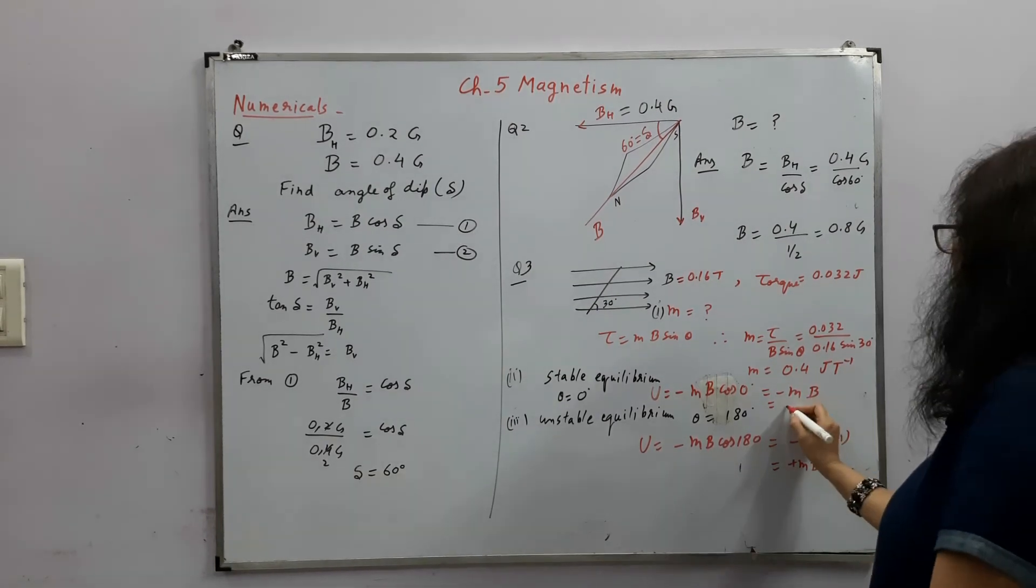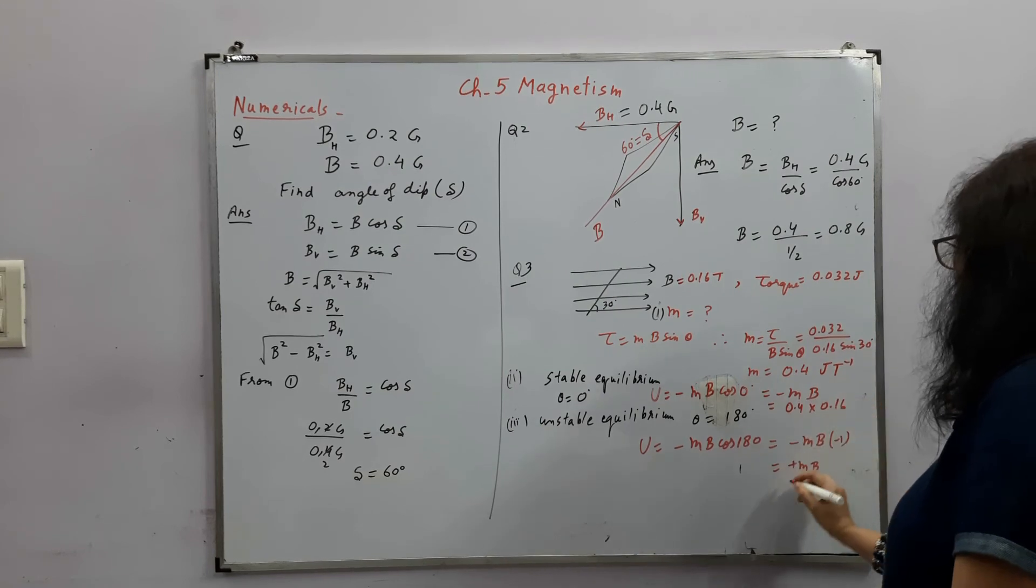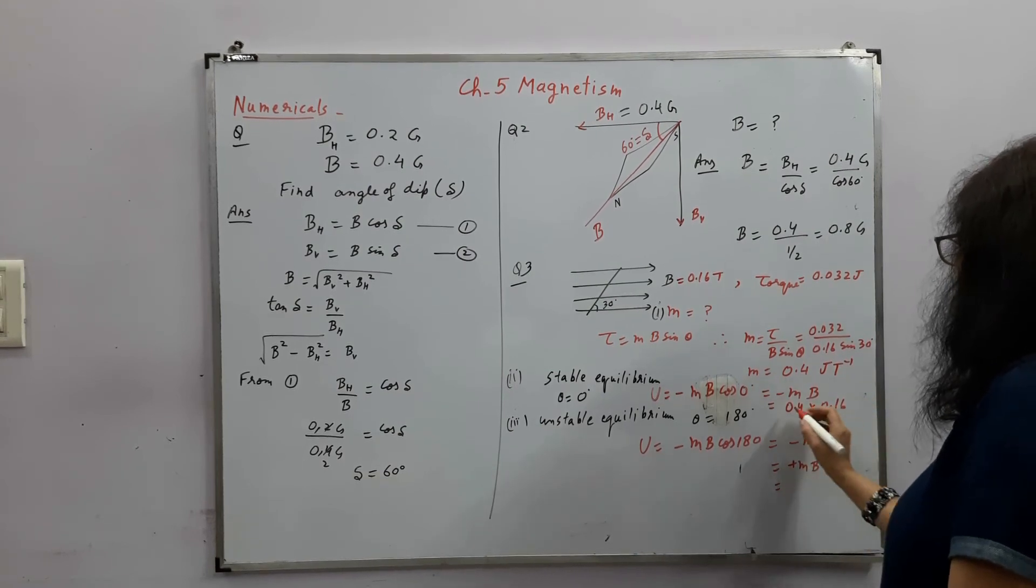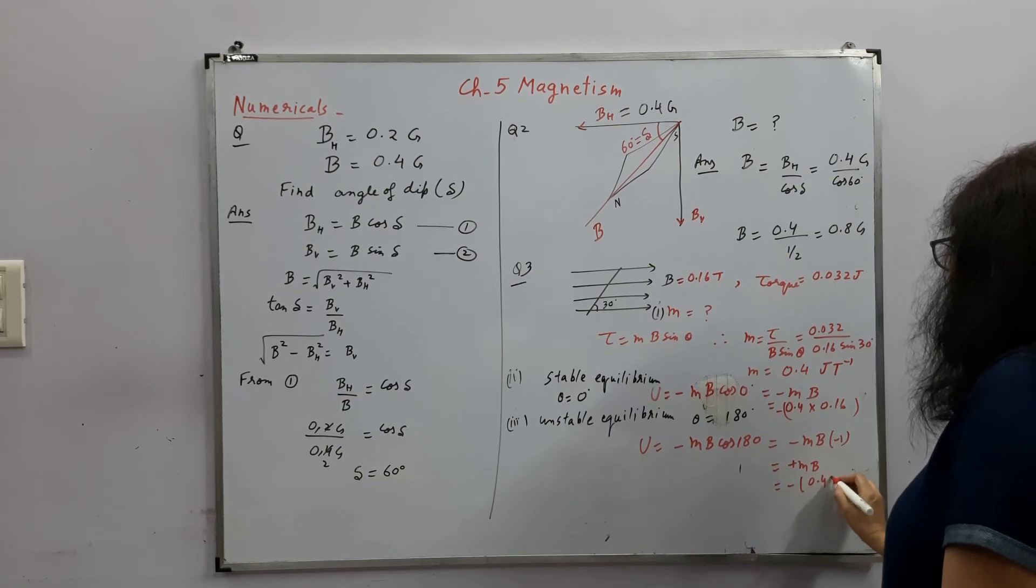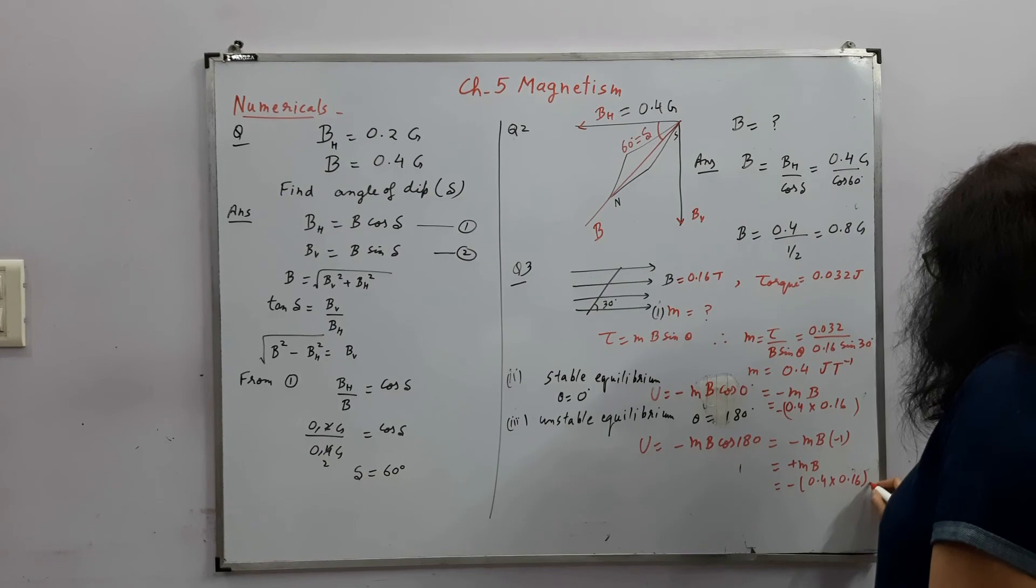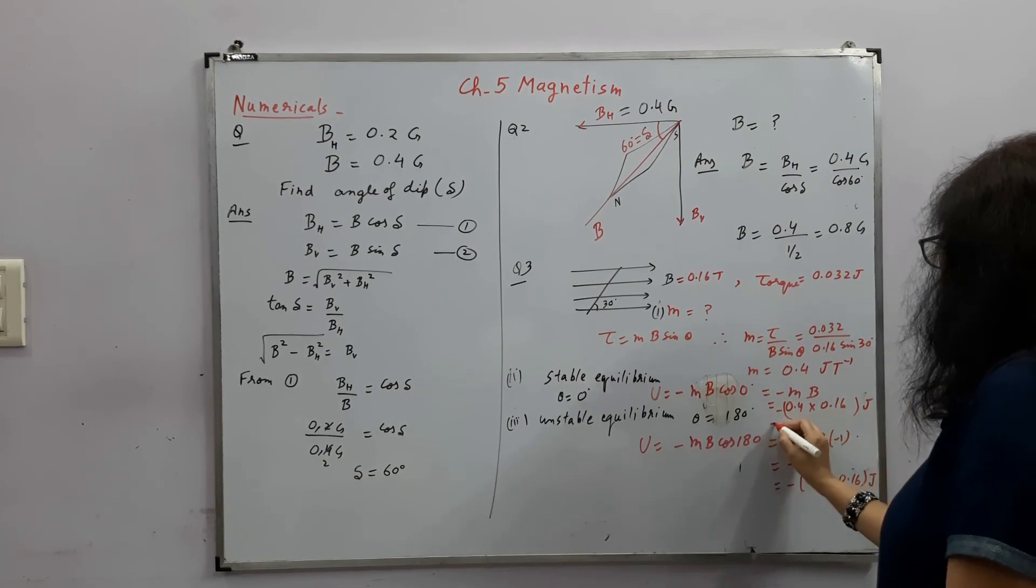So what will it be? 0.4 into 0.16 and here also but this will be minus and here also 0.4 into 0.16. So this is joules. This is also joules.